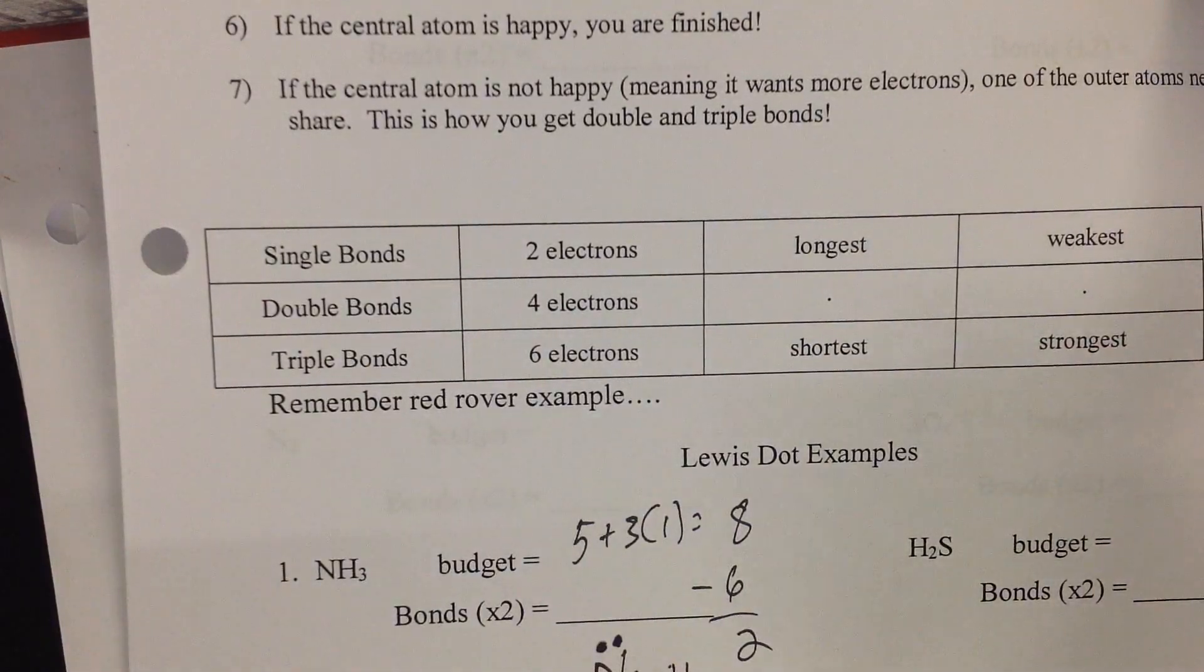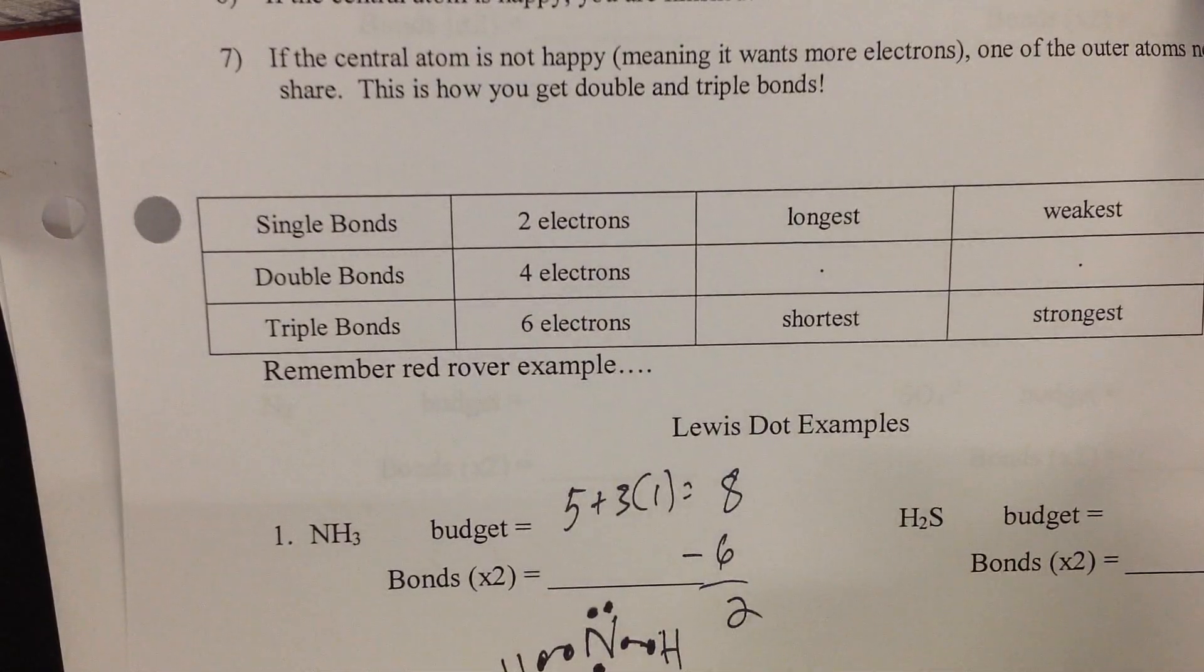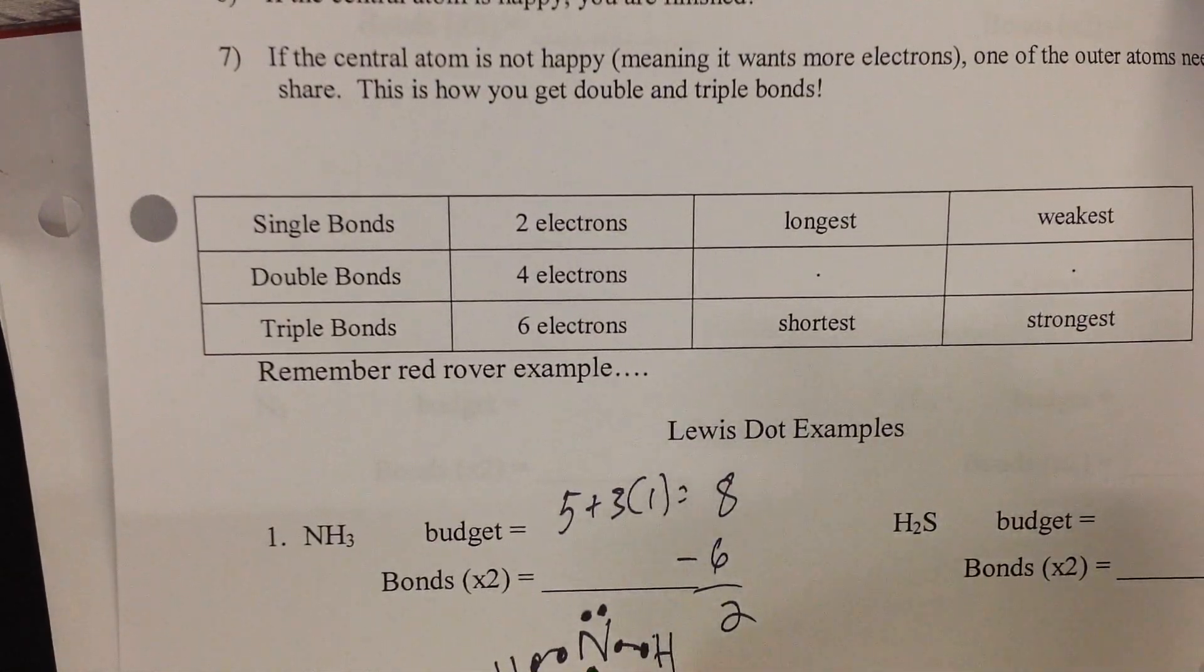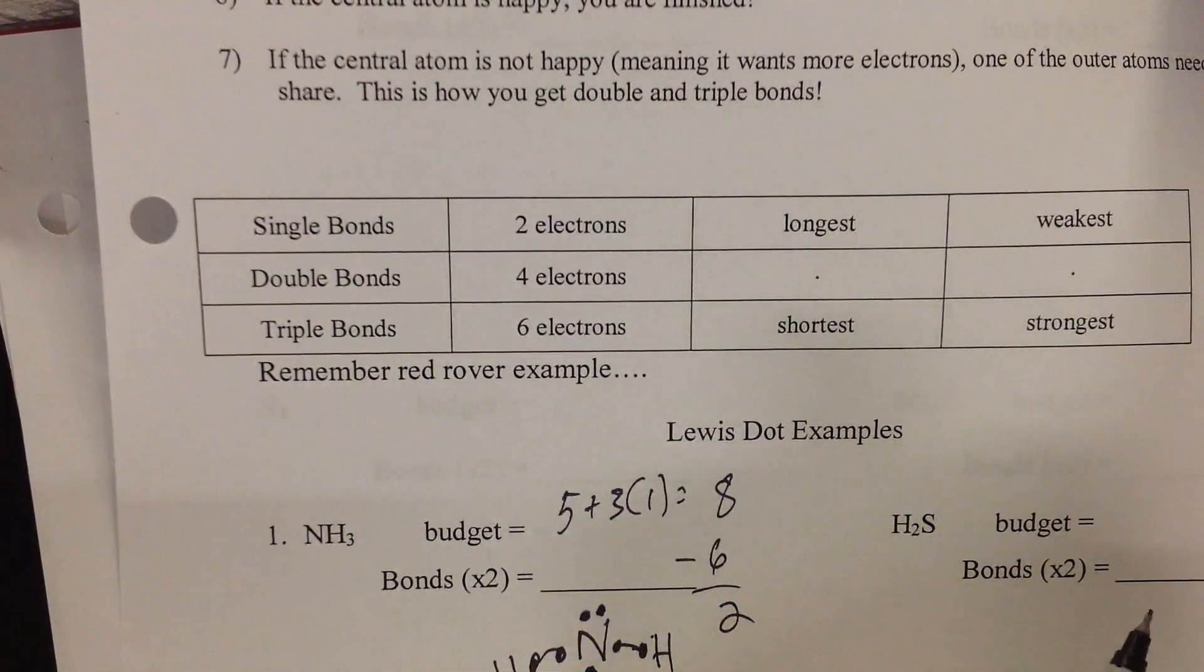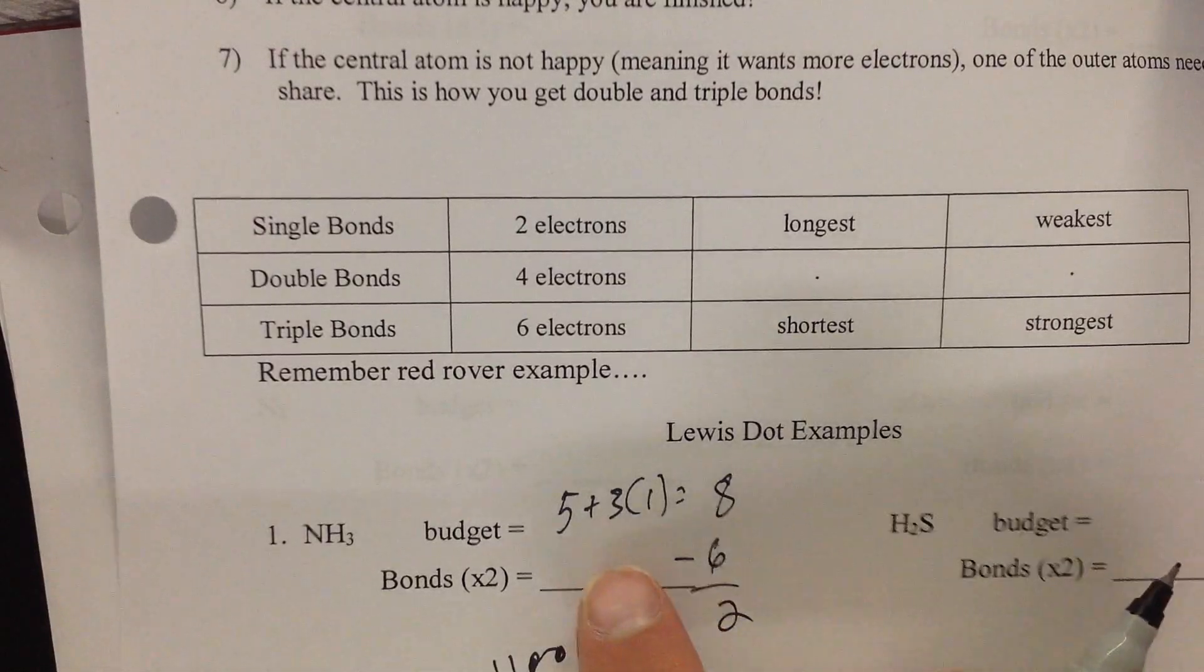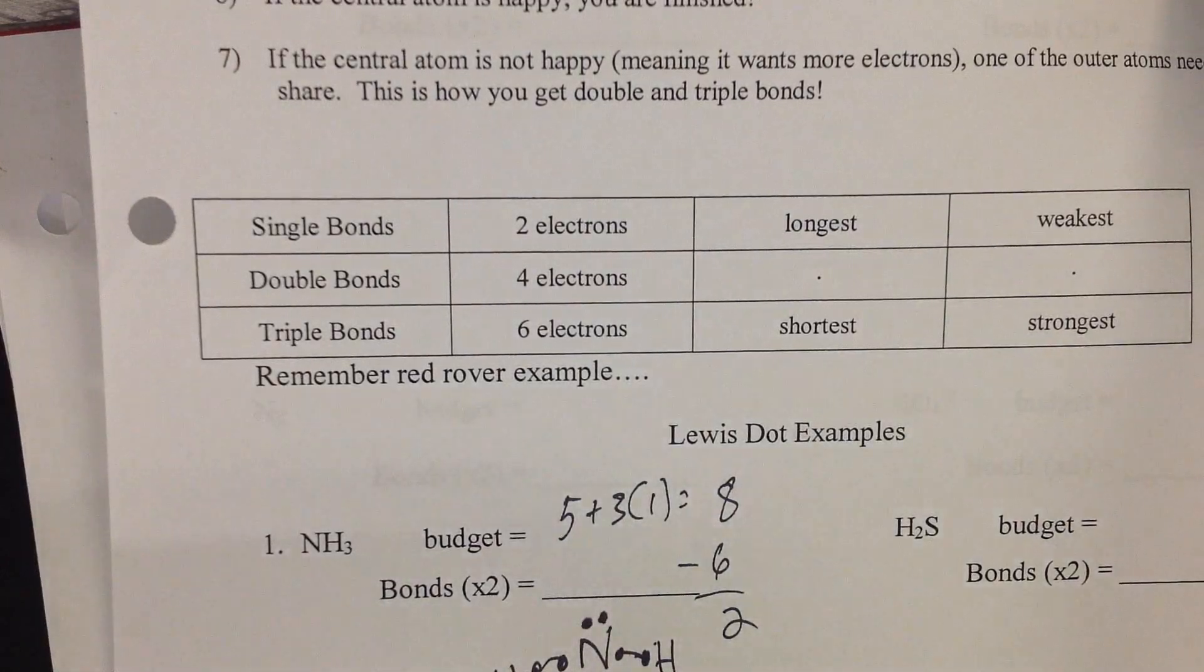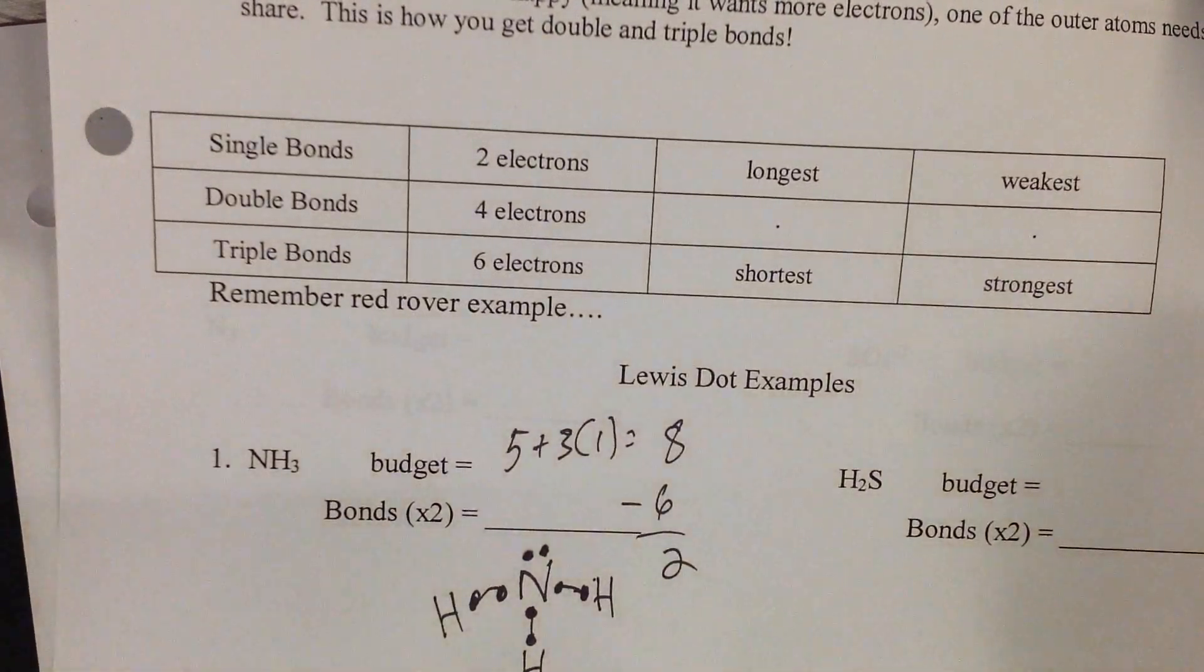Now using your knowledge from yesterday, and feel free to answer out loud. What is the shape of ammonia? You're right, trigonal pyramidal. What's the bond angle? Between the hydrogens it's going to be less than 109.5, and between the free pair and the H it's going to be greater than 109.5. So hopefully that gave you a little review of yesterday as well.